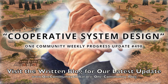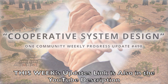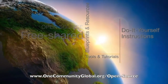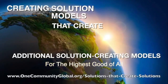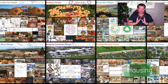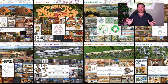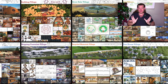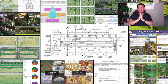Cooperative Systems Design — One Community Weekly Progress Update, number 498. One Community is a 501c3 nonprofit organization. We are creating open source and free shared blueprints and resources, tools and tutorials, and do-it-yourself instructions for highest good living — creating solution models that create additional solution-creating models in the service of all life on this planet. My name is Jay Sabel and I'm the Executive Director. This is our October 9th, 2022 edition of our weekly progress update, and today's topic is cooperative systems design.